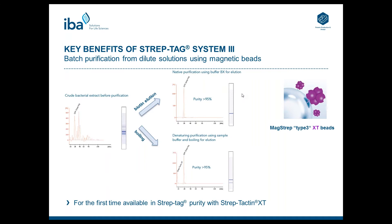So far, batch purification using the Streptactin system did not work in a sufficient and efficient manner. But using Streptactin XT on magnetic beads allows batch purification at Streptactin quality — meaning high purity. As shown in this example, crude bacterial extract was applied to the Streptactin XT magnetic beads and the target protein was eluted with biotin. The bioanalyzer data show that the purity of the GFP-Streptag protein is beyond 95%. You can also elute the target protein by boiling — adding SDS sample buffer directly to the beads and boiling. Here also, a purity of more than 95% was achieved. Note that Streptactin XT is also eluted from the beads and runs at 30 kDa when boiling is used.